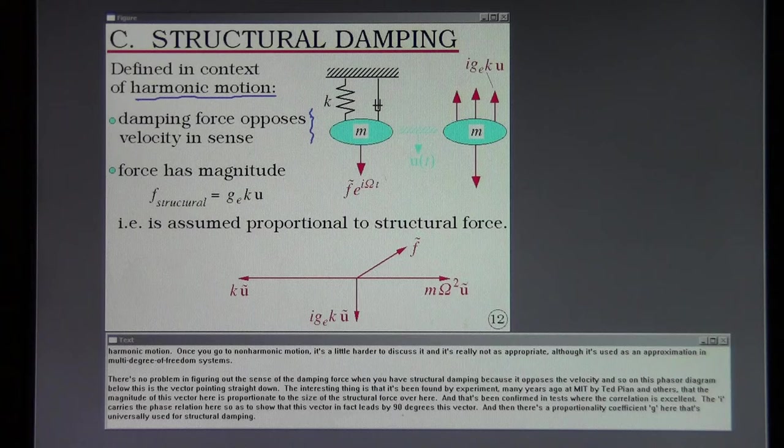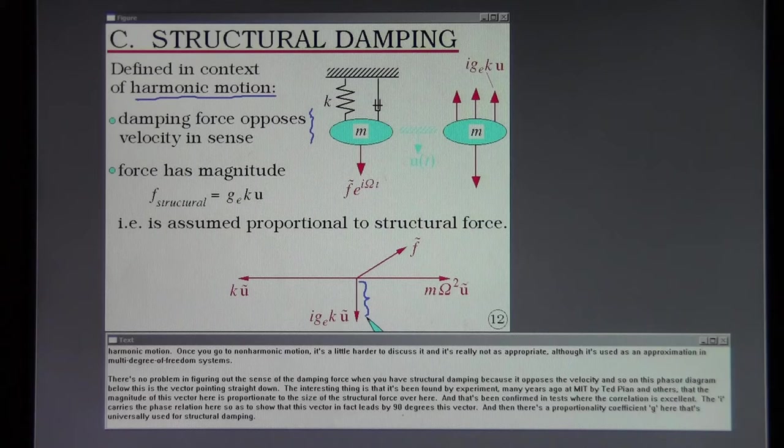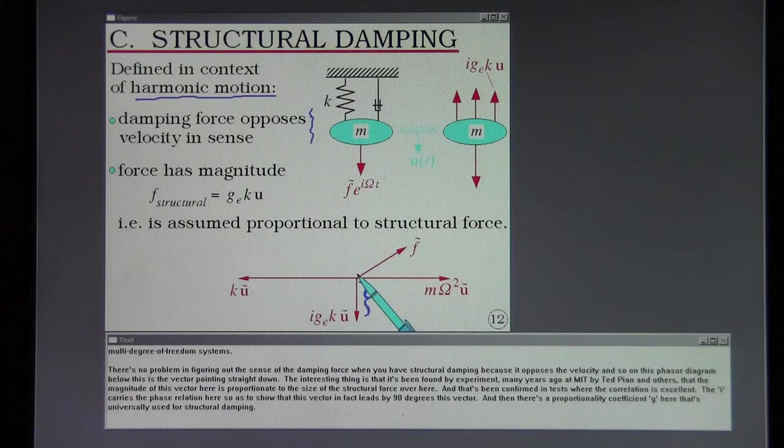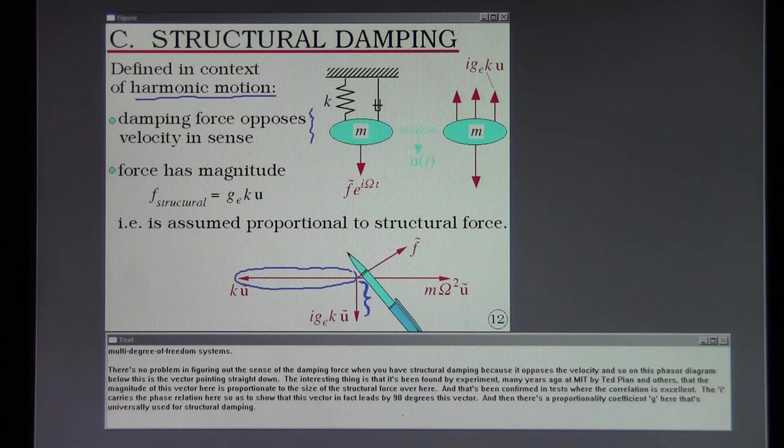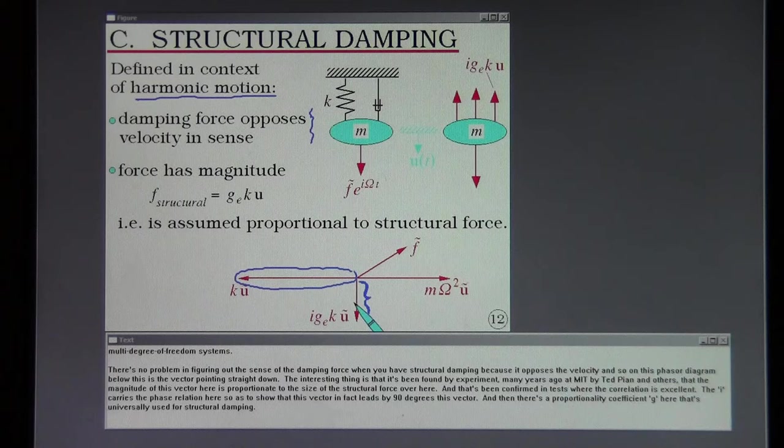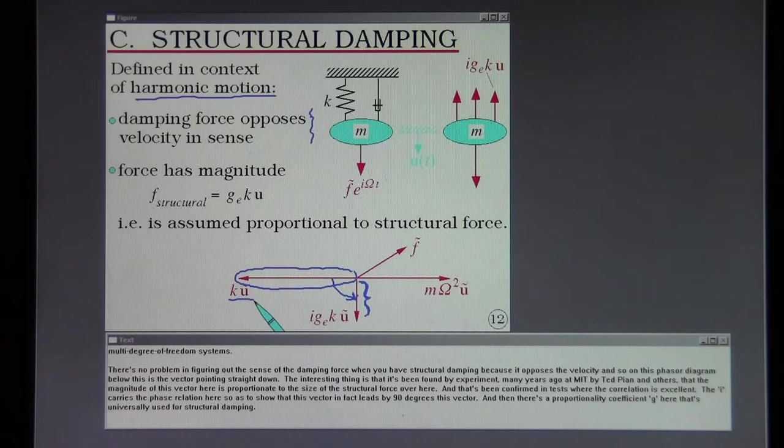There's no problem in figuring out the sense of damping force when you have structural damping because it opposes the velocity and so on this phasor diagram below this is the vector pointing straight down. The interesting thing is that it's been found by experiment many years ago at MIT by Ted Pion and others that the magnitude of this vector here is proportionate to the size of the structural force over here. And that's been confirmed in tests where the correlation is excellent. The i carries the phase relation here so as to show that this vector in fact leads by 90 degrees this vector. And then there's a proportionality coefficient G here that's universally used for structural damping.